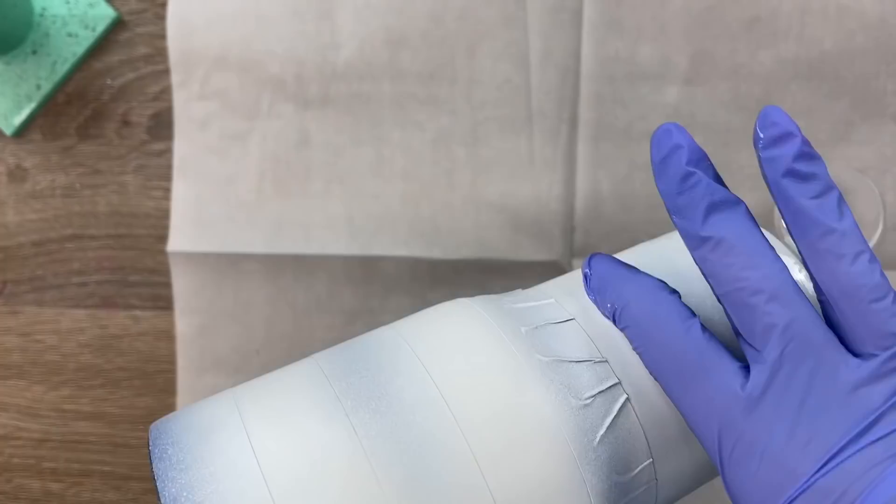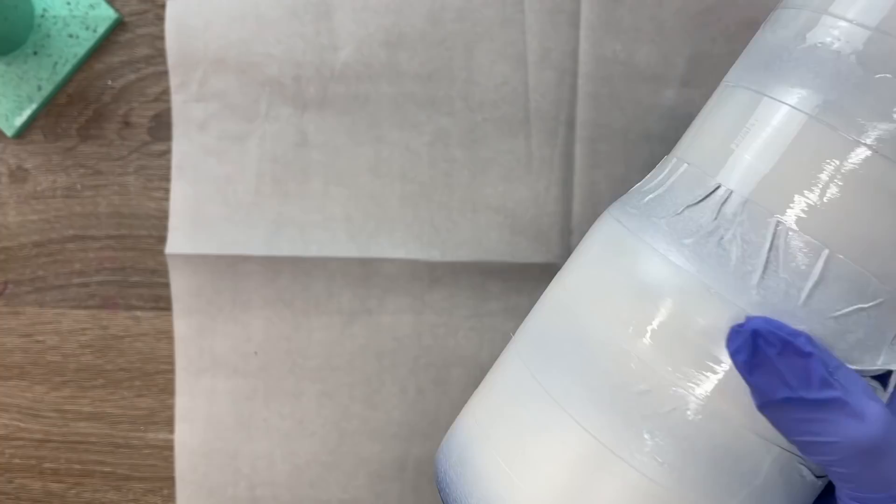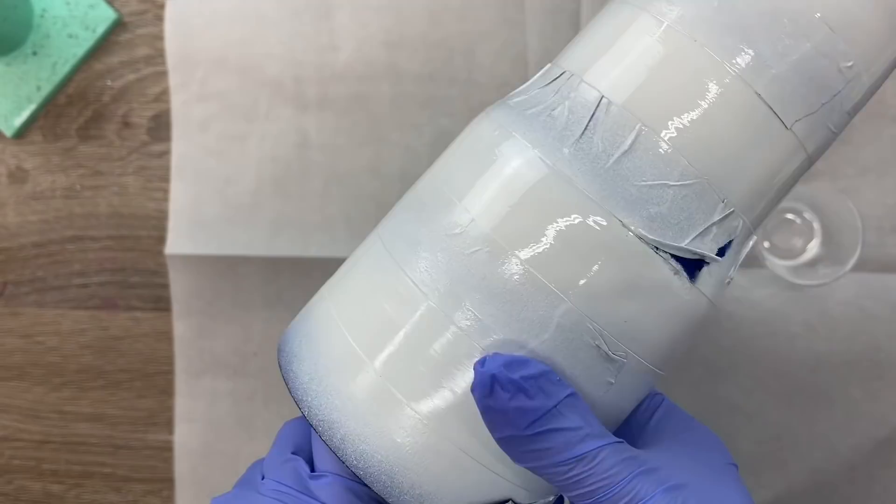Then I mixed five milliliters of epoxy, again using Amazing Quick Coat from Alumilite, that great fast setting epoxy. This is going to be the adhesive for our glitter.